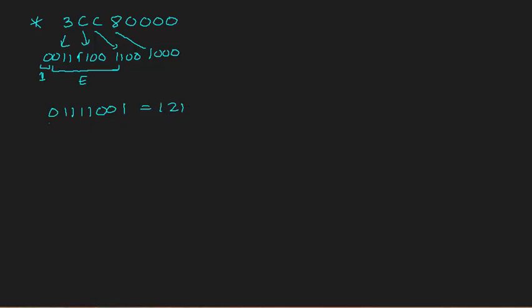We get 121. To find the actual power, we subtract 127 from 121, which gives us minus 6. So the value is represented as something times 2 to the power of minus 6.